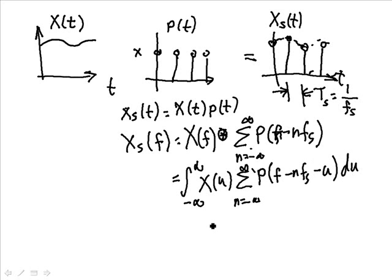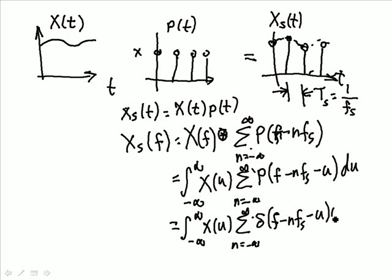But we know that this consists of a whole bunch of impulses. So we can rewrite this again, where we substitute our delta functions. X of mu, n equal minus infinity to infinity, delta f minus n f s minus mu du. But this integral exists only when u is equal to f minus n f s.